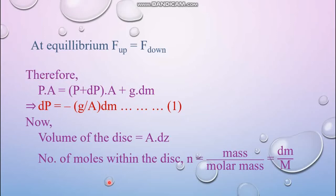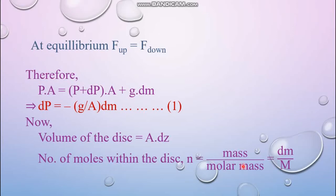The volume of the thin disc is A × dz, since area times thickness gives volume. The number of moles within the disc is N = dm/M, where dm is the mass of the gas and M is the molar mass. For example, 64 g of oxygen gives 64/32 = 2 moles. So the number of moles N = dm/M.